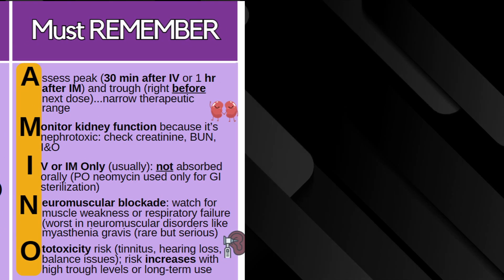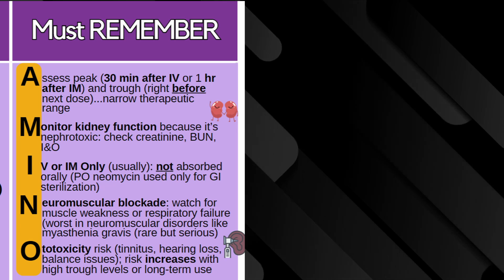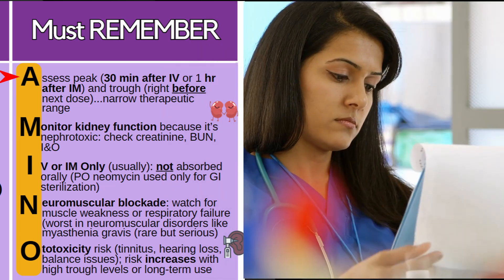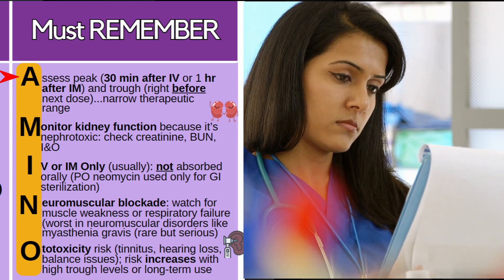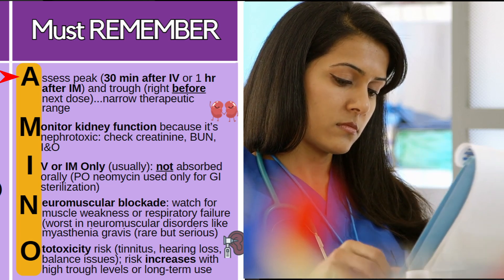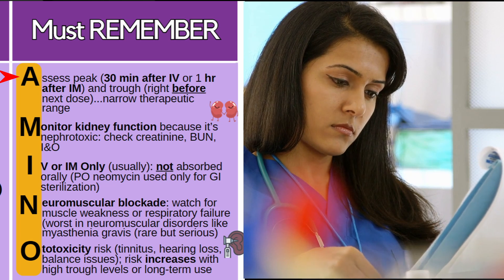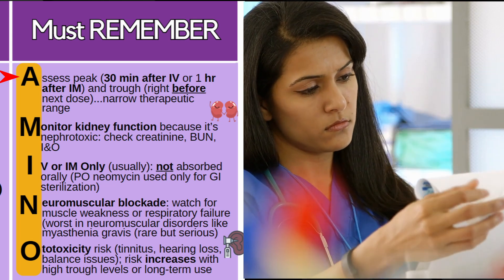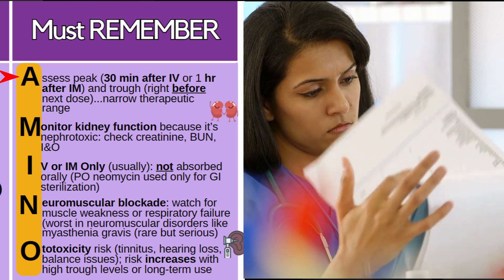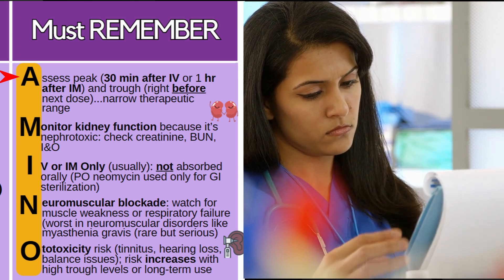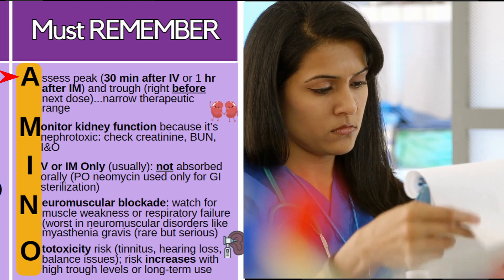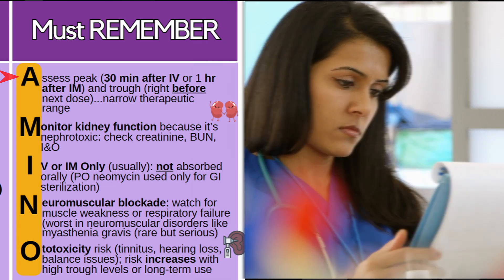What must you remember about this class? Remember the word AMINO — the first part of this class's name, aminoglycosides. A is for assess the peak and trough, because this medication has a very narrow therapeutic range. The peak is the highest concentration in the body, measured about 30 minutes after the IV form or one hour after the IM dose. The trough is the lowest concentration, measured right before the next dose.